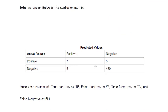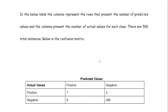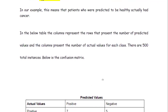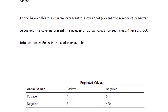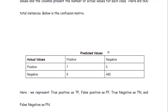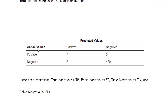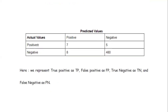This particular metric is known as the confusion matrix. Don't be put off by the term — it actually clears the confusion, and it is a very well-known term in machine learning, specifically for classification. In this confusion matrix, the rows represent the number of predicted values and the columns represent the actual values. There are 500 total instances with positive and negative classes.